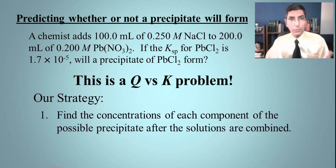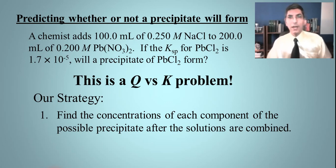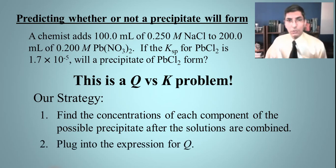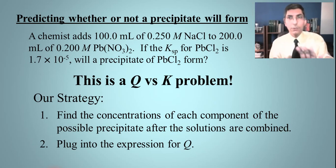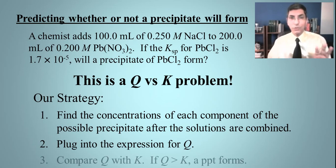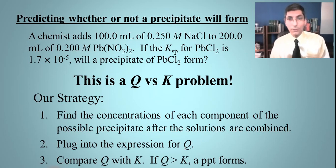Here's our strategy. First, we find the concentrations of each of the ion components of the possible precipitate after the solutions have been combined — that's a basic solution stoichiometry problem. Second, we plug those numbers into the expression for Q, which looks exactly the same as the expression for K: products over reactants raised to the power of the coefficient. Third, we compare Q with K. If Q equals K, it's a saturated solution. If Q is greater than K, we make a precipitate. If Q is less than K, we won't make a precipitate.